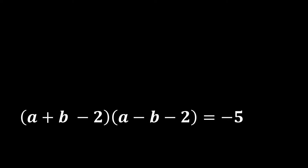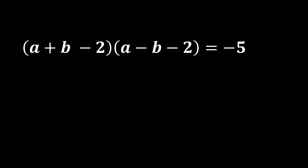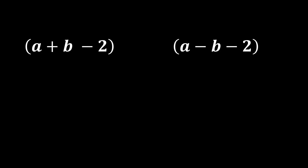Now we write the factor pairs of -5. The possibilities are: (-1)(5), (1)(-5), (5)(-1), and (-5)(1), all giving a product of -5.